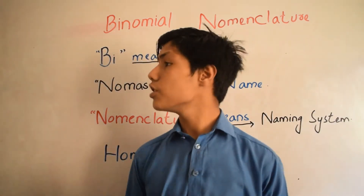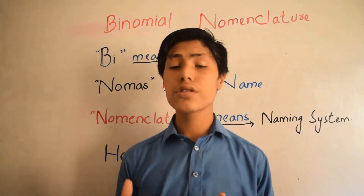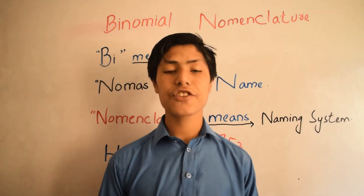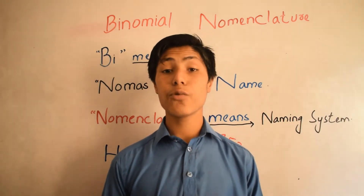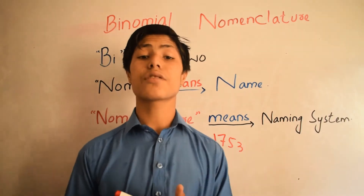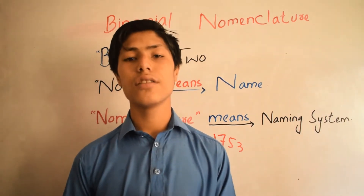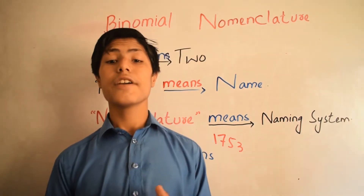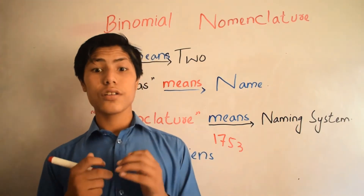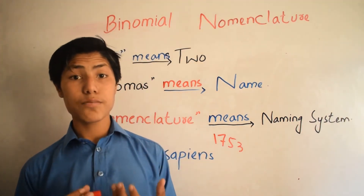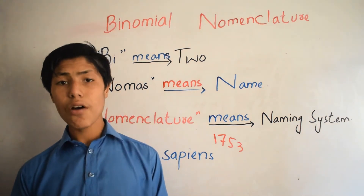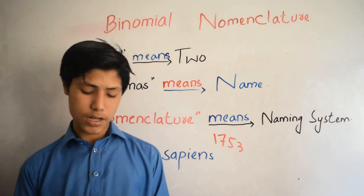Now let's come to the rules and regulations of binomial nomenclature. What rules did Carlos Linius set for this system? The first rule is that according to this system, the scientific name must be taken from the Latin world. How is it taken from the Latin world?